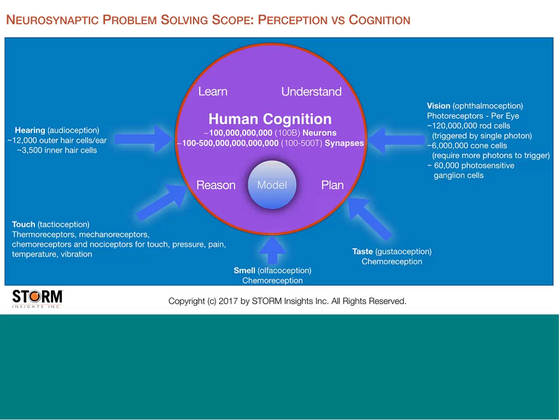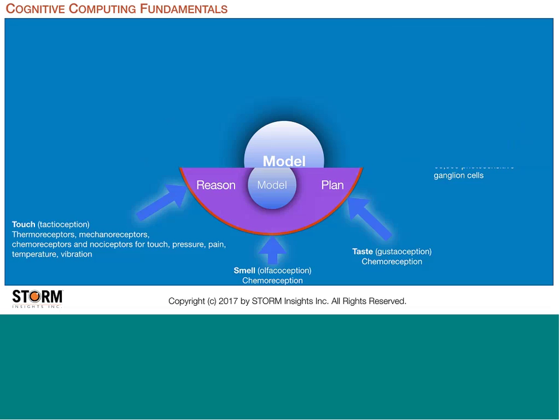We don't need 120,000 rod cells modeled as individual perceptrons in a computer system — we can sample and get that information, which is why we're making good progress in vision. When we're looking at human cognition for learning, understanding, reasoning, and planning, the human brain has about 100 billion neurons and between 100 and 500 trillion synapses. If we try to do everything the way the brain does it, even with all the advances in hardware and big data, we're really hamstringing ourselves.